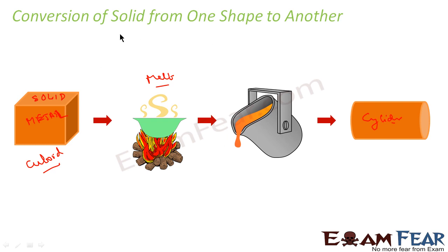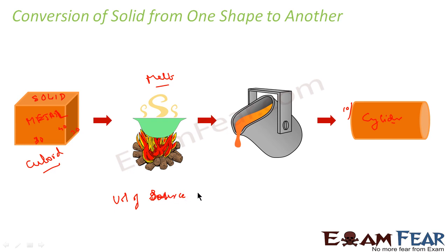So here what we will study is how to convert one shape to another shape. Let's suppose we are told that the dimensions of this cuboid are 30, 30, and 40, and from this we are forming a cylinder whose radius is 10 — we want to find the height. The key here is: the volume of the source solid will be equal to the volume of the target solid.